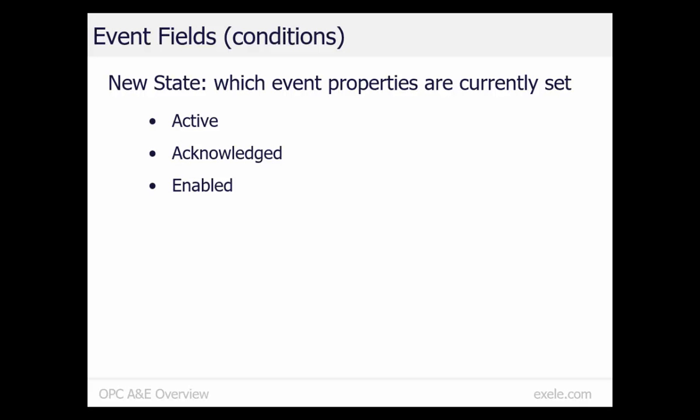New state indicates the event properties of the condition which are currently set or true. The new state can include one or more of these states: active, acknowledged, and enabled. New state does not indicate that an item just changed — it indicates that the item is currently true. For example, an alarm condition may occur and then later be acknowledged while the alarm is still active. Two events arrive: one for the alarm active event and one for the acknowledge event. In both events, the new state value of active is true because the condition is active. In the second event, the new state value of acknowledged is also true.